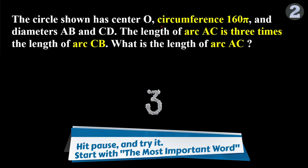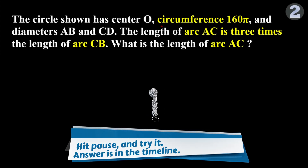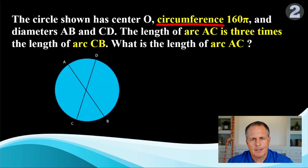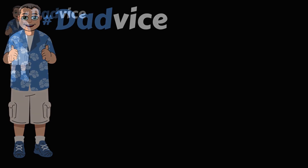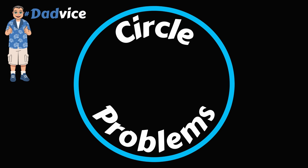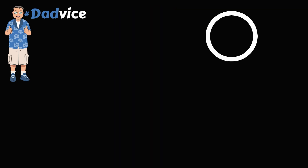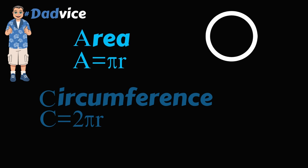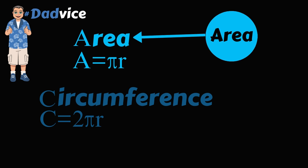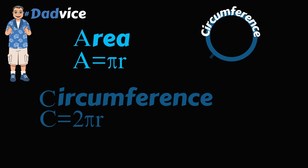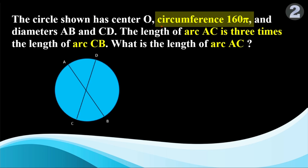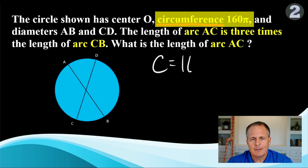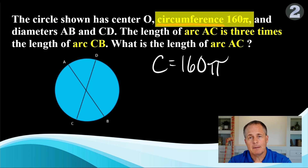Now tap pause to try problem 2 on your own. They already drew the picture, so it's time to label it and write an equation. Here's some advice: when you have a circle problem, immediately decide if it's an area problem or a circumference problem. If the problem says area, it's an area problem; otherwise, it's a circumference problem. Here they were being nice and told us the circumference is 160π.